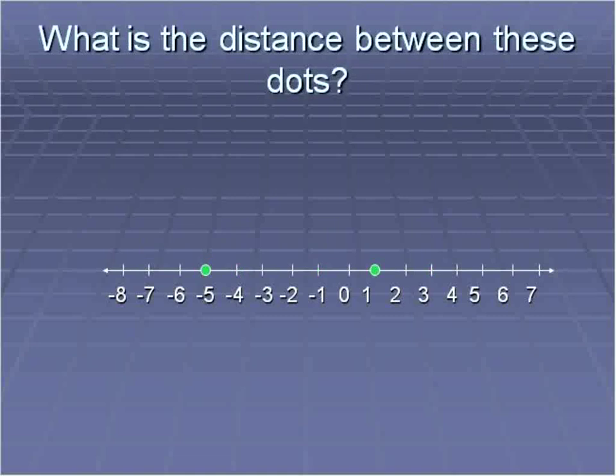When we're looking at number lines in the past, we've said, what is the distance between these dots? And we've calculated that distance in a couple of ways. You can either simply count. That's one, two, three, four, five, six.